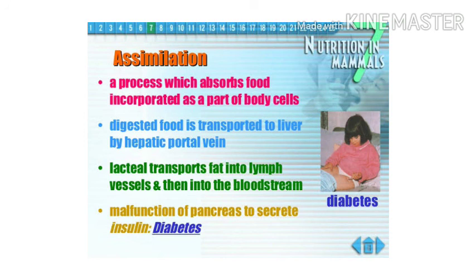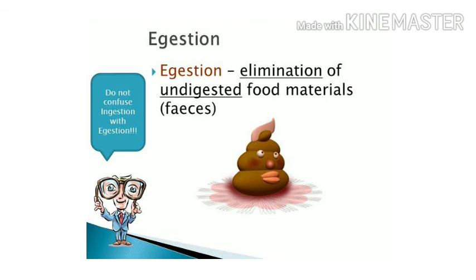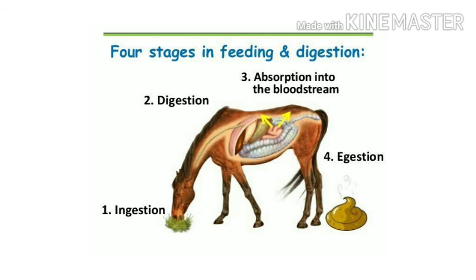Now we come to the last process of digestion, or nutrition — that is egestion. Egestion is the elimination of undigested food material from the body in the form of feces. It is very important because without egestion, our body would just be like a tank storing everything inside. As a whole, you can see that first the animal is eating — that is ingestion; next, digesting; then absorption; and the fourth one is egestion. That's all. Thank you.